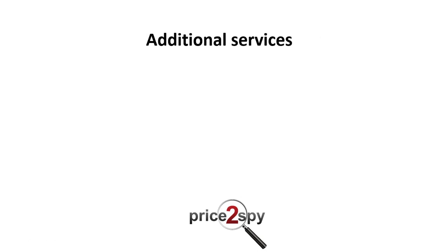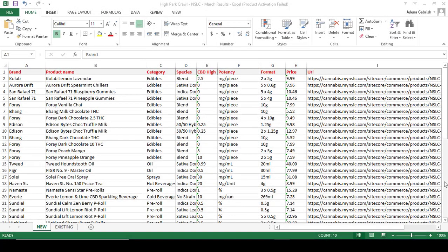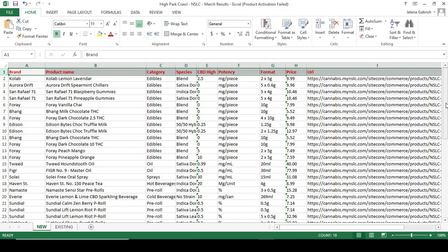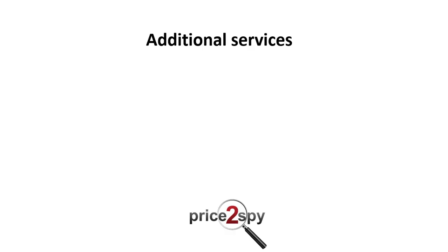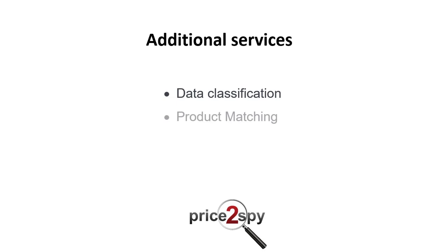Additional services — by its nature, product data extraction provides data in a structured Excel file as it gets found on the targeted website. However, please be aware that Price to Spy can help with additional data tasks which may be done after the results are ready. Data classification — for example, if the website where we performed extraction uses a different set of categories than you do, you may want to ask us to deliver categories according to the way your website does it. Matching — matching extracted results against your own products or products from a different website.